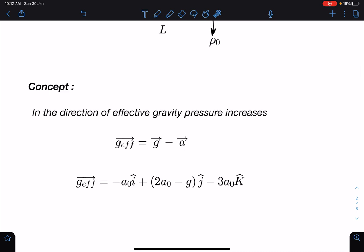In the direction of effective gravity, pressure increases. So when we talk about effective gravity, it is basically we observe liquid from the vessel frame, right, in the frame of reference of vessel.